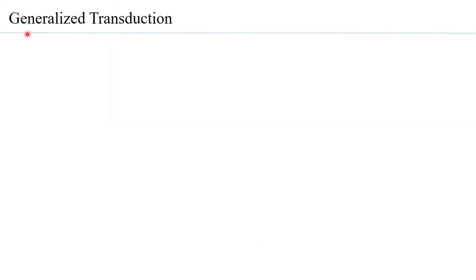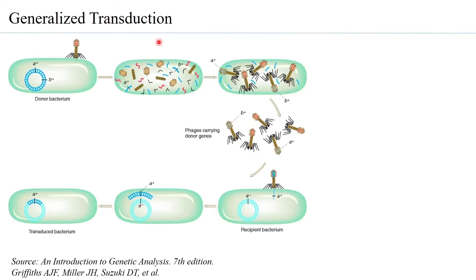When DNA is transferred from a virus into a host, that phenomenon is called transduction. Now let us look at generalized transduction. Take a lambda phage infecting a host bacterium that has genes A plus and B plus. When the virus infects the bacteria and goes into the lytic cycle, the viral genome multiplies — shown in pink — and the viral DNA is transcribed and translated to form coat particles, followed by assembly of virus particles.